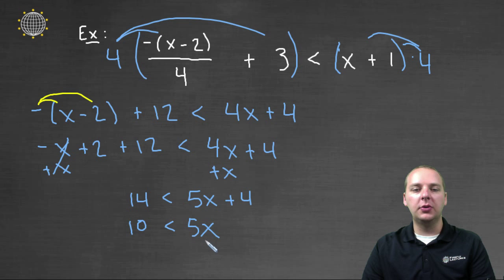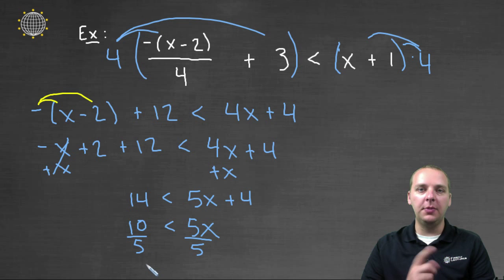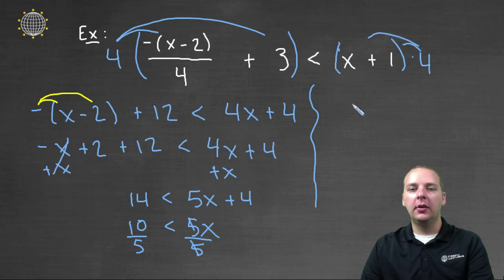Then we'll divide by the variable's coefficient, which is five, so we'll divide by five. Again, I do not have to flip the inequality around, because we're dividing by a positive number. And so we would get the inequality, two is less than x,